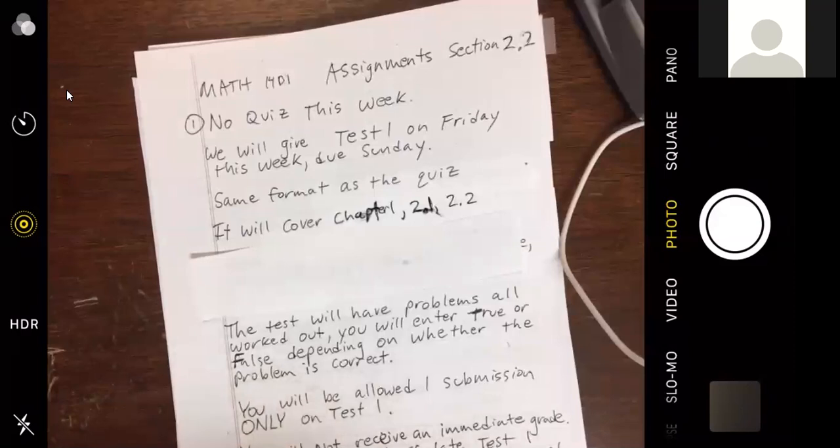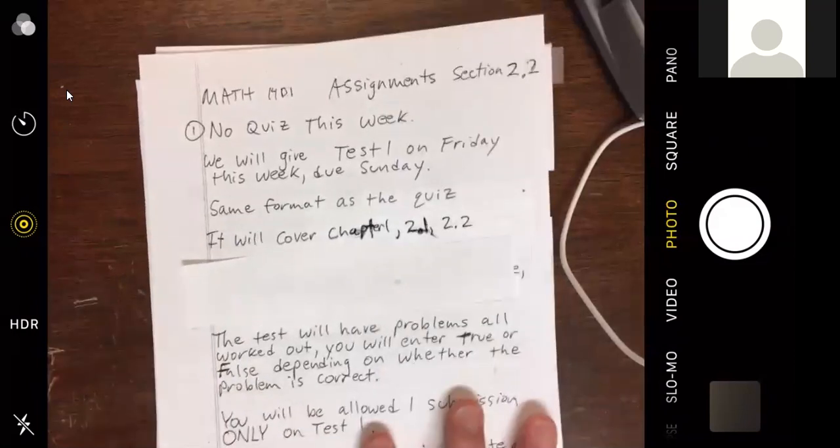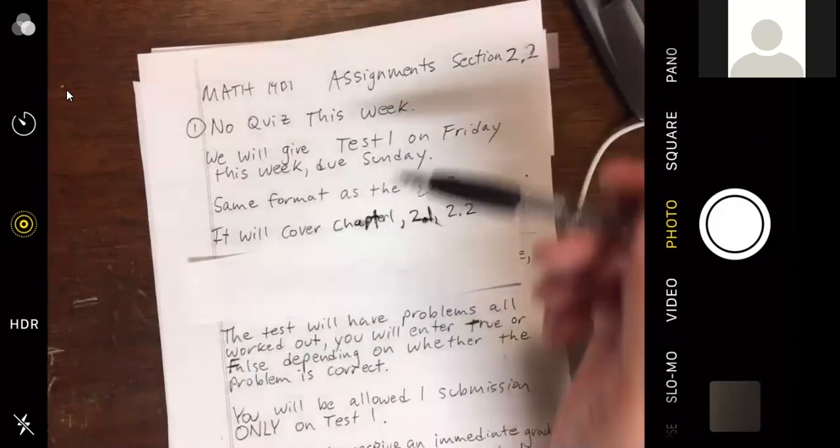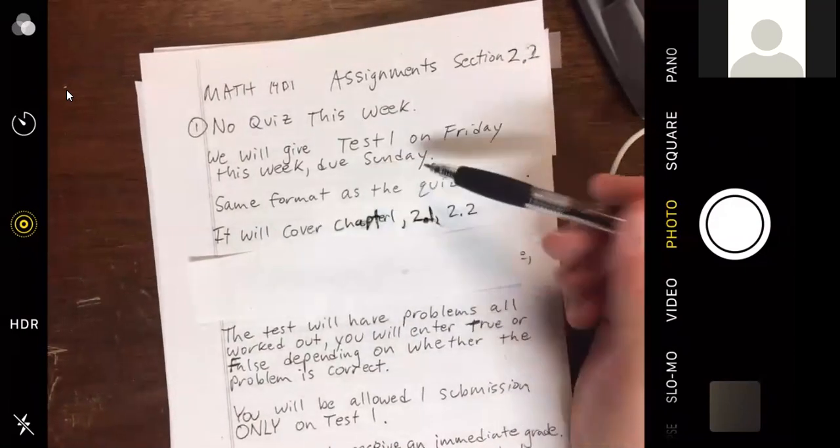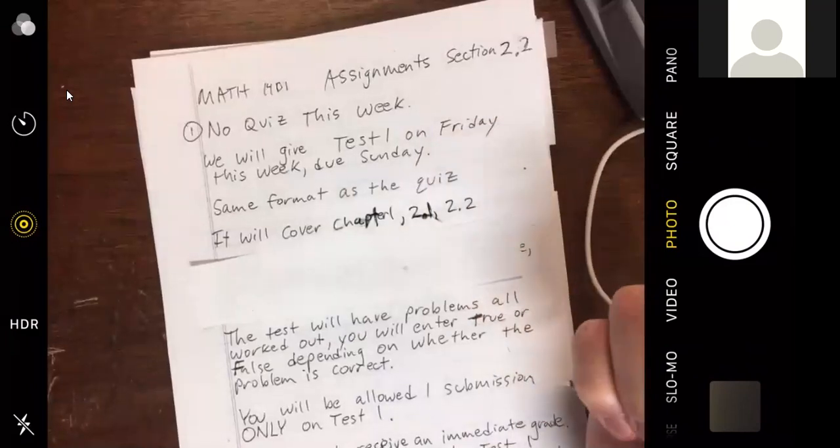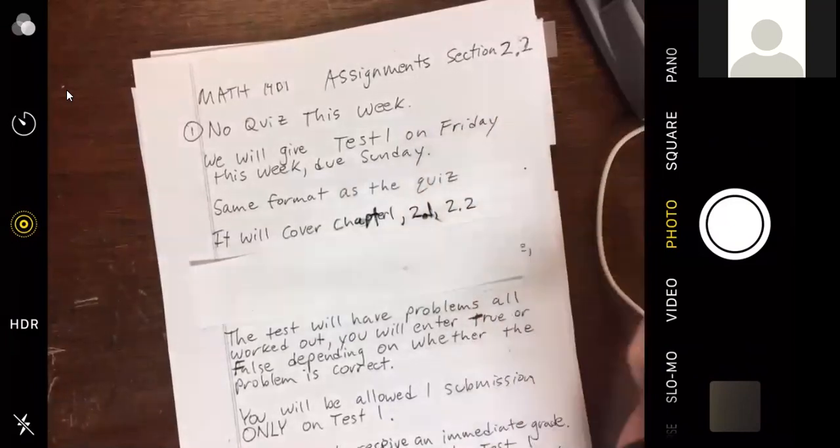Yeah, I probably will. This will probably take about 10 minutes to do everything they're doing in this section. And then we can open it up and try to have an example problem. So I'll go over the assignment first. We're finishing the first unit here. Chapter one, section 2-1 and 2-2. So we got no quiz this week over just 2-2. We will give test one on Friday this week and make it due Sunday. Same format as the quiz.